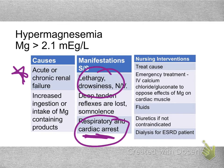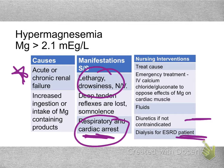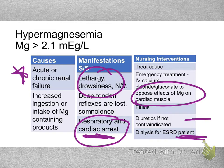To get magnesium levels down, we can give diuretics if not contraindicated. If it's a dialysis patient, they may need dialysis. We can give calcium gluconate or calcium chloride, but remember — that only prevents the heart from going into lethal dysrhythmias; it doesn't bring down the magnesium. Fluids, diuretics, and dialysis are the key treatments for high magnesium.